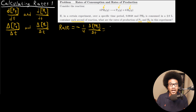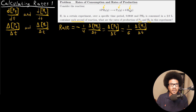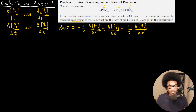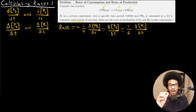The other ways are for the products. For phosphorus, we can have delta P4 over delta T. Or we can write out the rate of this reaction as one-sixth times delta H2 over delta T, with the six coming from the stoichiometric coefficient in the chemical equation. So these are three equivalent ways that we can write out the reaction rate — the rate of decomposition of our reactant or the rate of formation of our products.